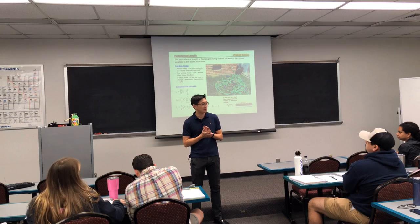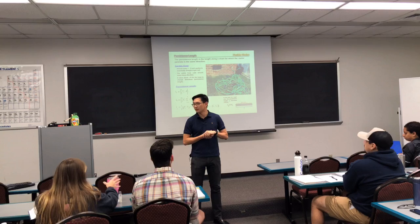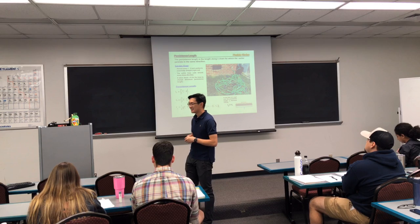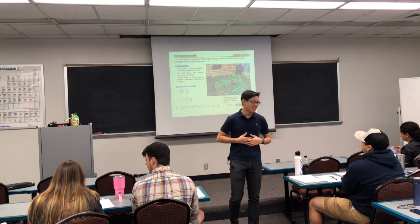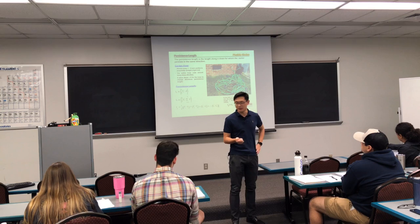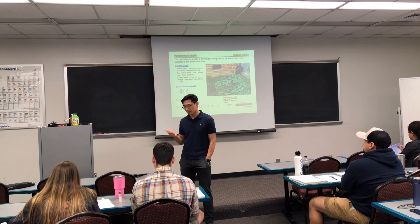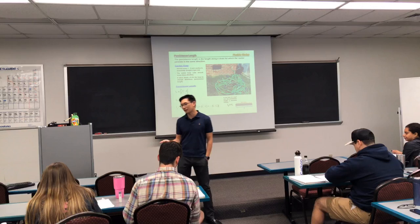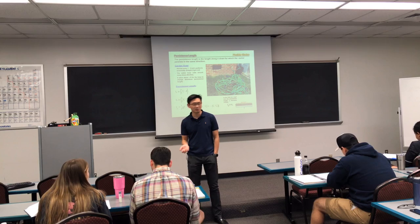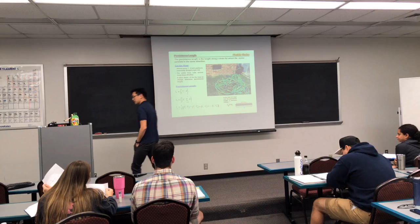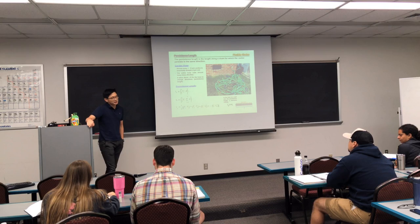How many of you have finished reading chapter 6.4? About half — good. Chapter 6.4 covers persistence length and the worm-like chain model. For today's first half of the lecture we're going to finish that, and if we have a little time we'll start covering 6.5, which is radius of gyration — why we need that second parameter beyond end-to-end distance.